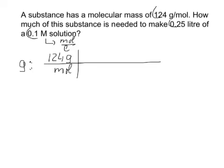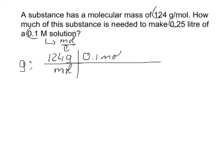We now notice that we have mole in the denominator. So the next step is to look at our givens and choose the one that contains mole in it. The only one that contains moles is the 0.1 mole per liter. We write it in a way that this mole and the previous mole are on opposite sides of the line — so mole needs to be on top. We write this as 0.1 mole per liter, so the two mole units are on opposite sides.